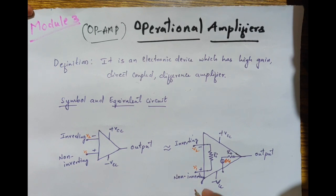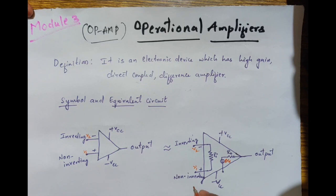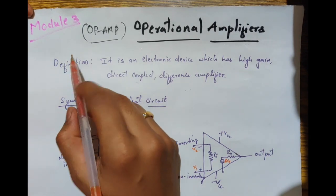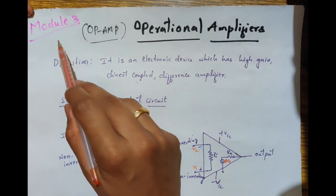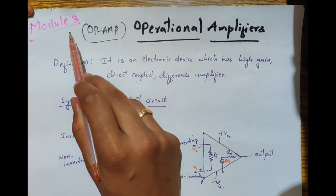Hello everyone, this is your course instructor Darshan R.V. In today's lecture we will discuss about the operational amplifier, also called as op-amp. It is module 3 in the basic electronics course.